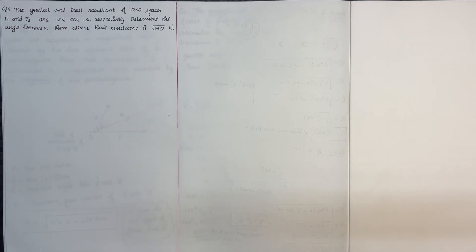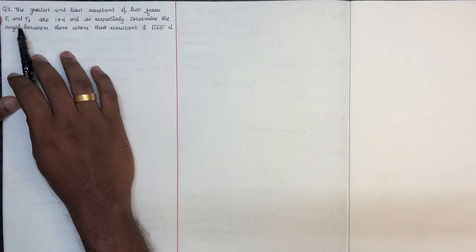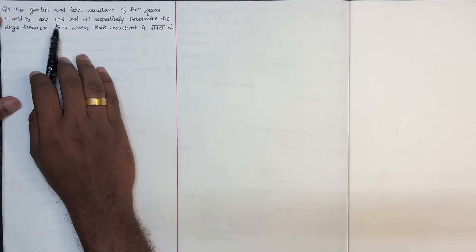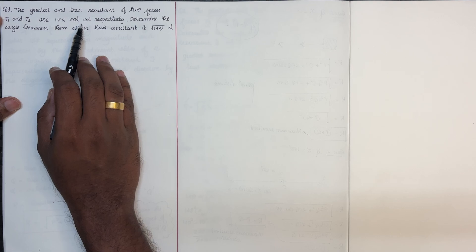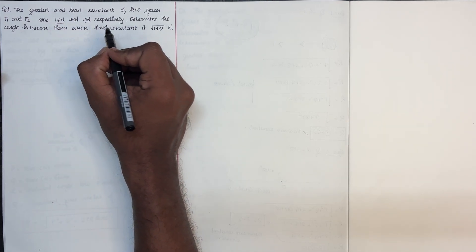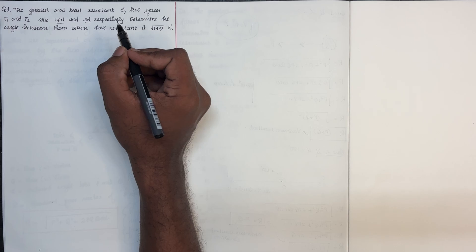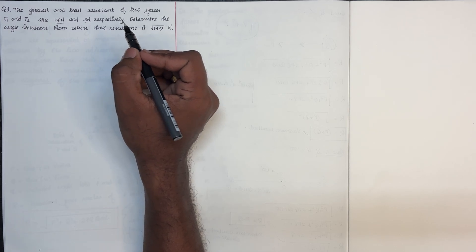Let's take a look at the parallelogram. The greatest and least resultant of two forces F1 and F2 are 17N and 3N respectively. This is the greatest and least resultant of two forces.